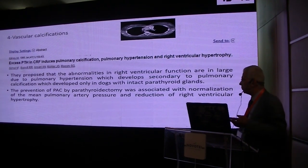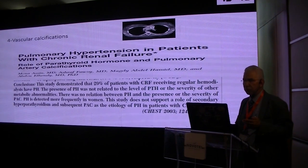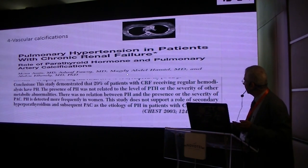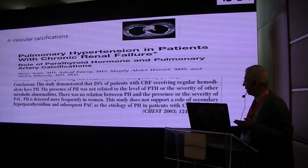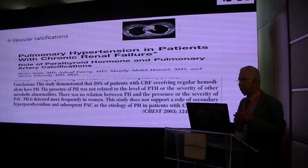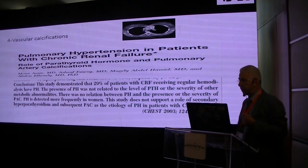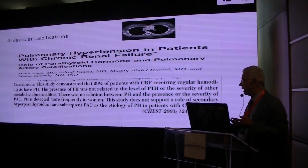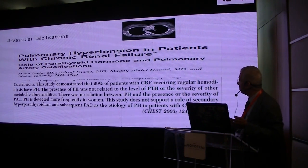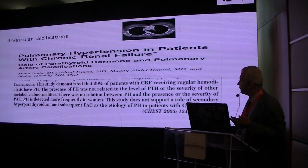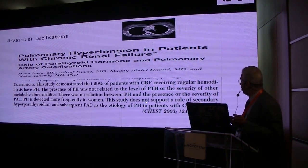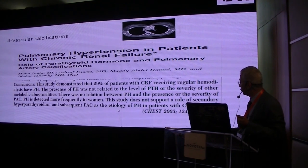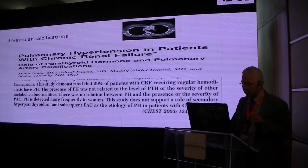At that time it was suggested that pulmonary arterial calcification can induce pulmonary hypertension. However, a 2003 Egyptian study by Dr. Magdi Abdelhamid studied pulmonary hypertension among chronic hemodialysis patients with arteriovenous fistula. They again proposed that parathyroid hormone excess can induce pulmonary hypertension, but unfortunately found no relation between the severity of pulmonary arterial calcification and pulmonary hypertension. Moreover, this study does not support the role of secondary hyperparathyroidism and subsequent pulmonary arterial calcification as an etiology for pulmonary hypertension in chronic renal failure.